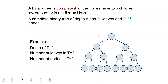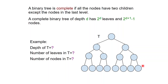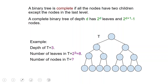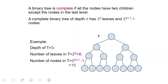We're going to go back to trees for a little while. We will call a binary tree complete if all the nodes have two children, except the nodes in the last level. Here is a complete binary tree — every node has two children except the nodes at the last level. A complete binary tree of depth D has 2^D leaves and 2^(D+1) - 1 nodes total. For example, with depth three you have eight leaves and fifteen nodes.